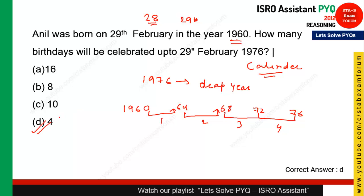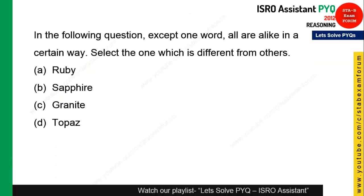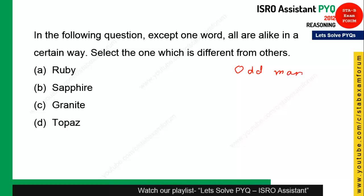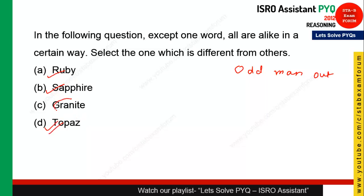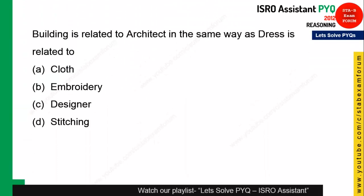The next question is from the category odd man out — a very simple one. Out of the four options, ruby, sapphire, and topaz are all gemstones, but granite is not a gemstone. So option C is the odd man out and option C is the right answer.